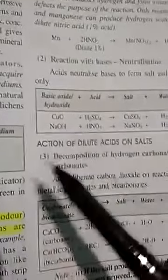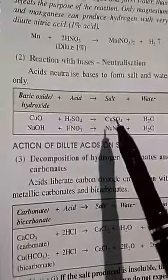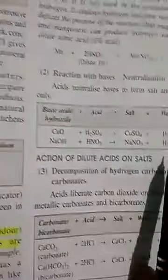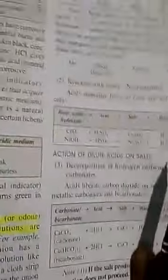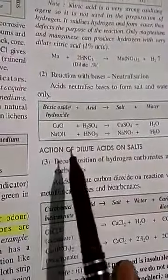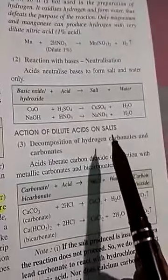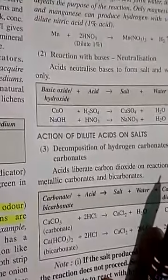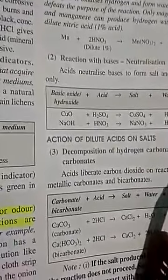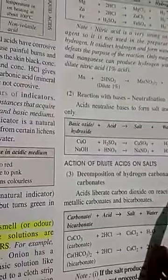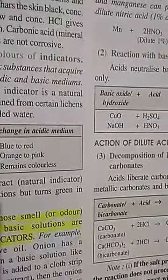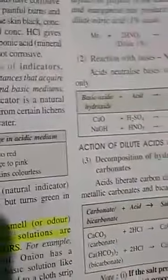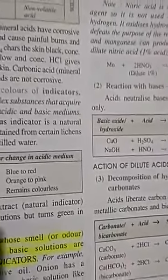Here are acids and bases reacting to form salt. Now, here is action of dilute acid on salt. There are many types of salts: sulfate salts like calcium sulfate and magnesium sulfate; chloride salts like calcium chloride, magnesium chloride, zinc chloride; carbonate salts like sodium carbonate; and bicarbonate salts like calcium bicarbonate and magnesium bicarbonate.